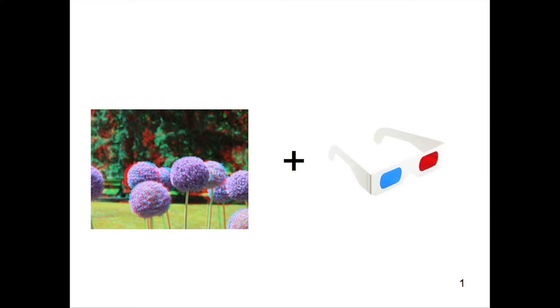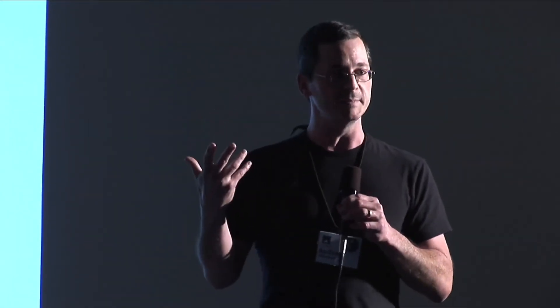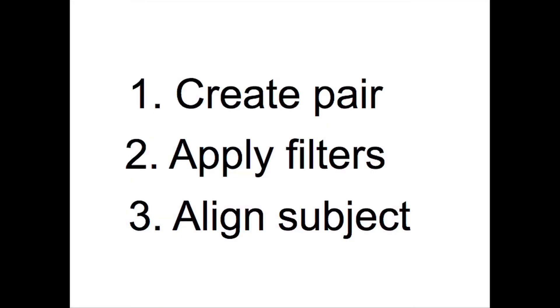Anaglyphic 3D photography is what we're mostly familiar with. That is the process where you take two images — a stereoscopic pair — one is tinted red and one is tinted blue, and they're combined into a single image. When you look at it through 3D glasses, that gives you a perception of depth because those cues cause you to reassemble it as a 3D image in your mind. There are three steps to DIY 3D photography: create your stereo pair, apply red and blue filters, and align the subject so it becomes a coherent image.